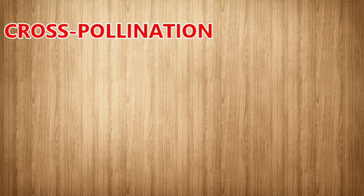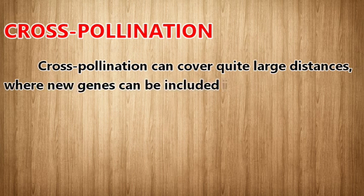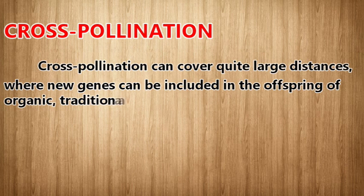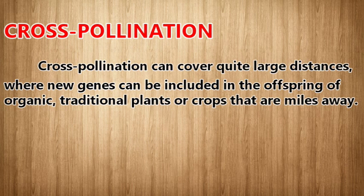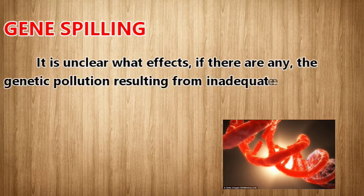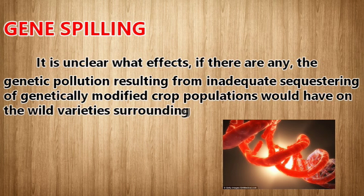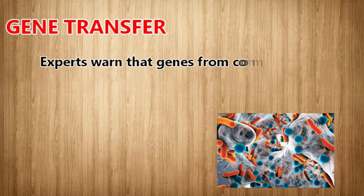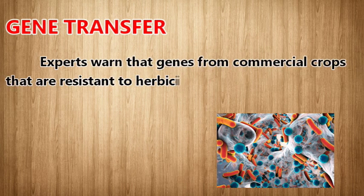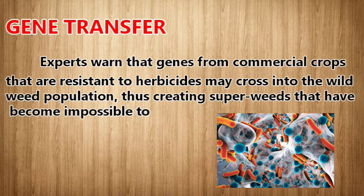Cross-pollination: cross-pollination can cover quite large distances, where new genes can be included in the offspring of organic, traditional plants or crops that are miles away. Gene piling: it is unclear what effects, if any, the genetic pollution resulting from inadequate sequestering of genetically modified crop populations would have on the wild varieties surrounding them. Gene transfer: experts warn that genes from commercial crops resistant to herbicides may cross into the wild weed population, thus creating super weeds that have become impossible to kill.